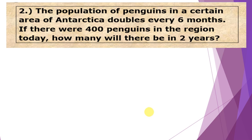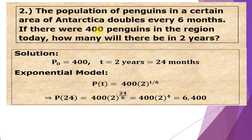Number 2: The population of penguins in a certain area of Antarctica doubles every 6 months. If there were 400 penguins in the region today, how many will there be in 2 years? Well, initial amount P₀ = 400 penguins. Then the time T is 2 years, equivalent to 24 months. We have P(t) = 400 × 2^(t/6) because it doubles every 6 months.